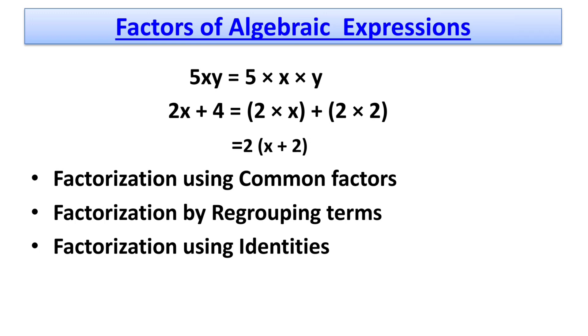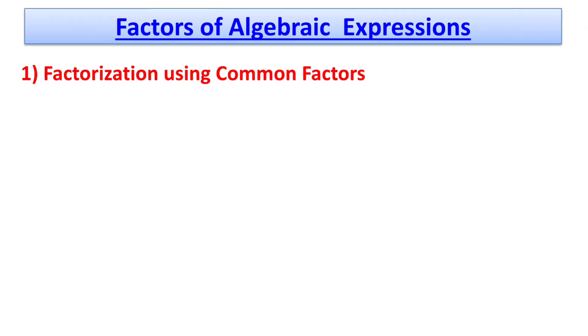Let us discuss these methods one by one in detail. The first one is factorization using common factors. Here we have the example 12a²b + 15ab².